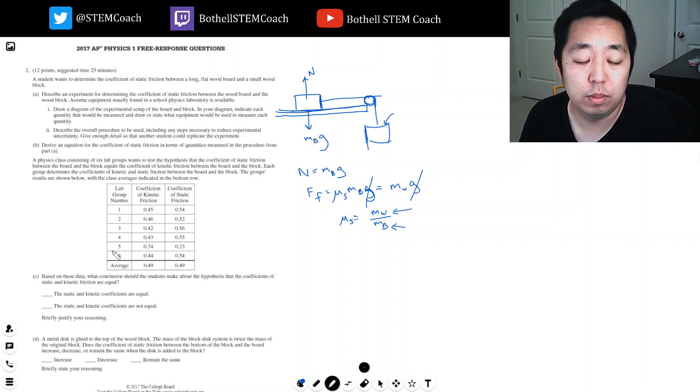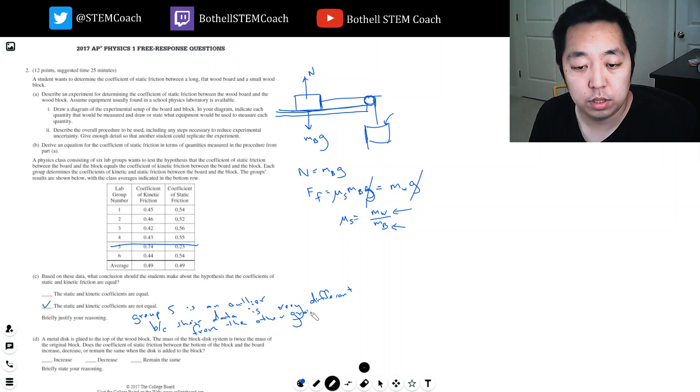That's kind of weird. I would say they're not equal. Lab group five messed up because this data is so different, like the 0.74 is so much bigger than 0.23, but everyone else is pretty consistent. So I'm going to say group five is an outlier here, because their data is very different from the other groups. And then basically the rest of the data is showing that the static friction is higher.